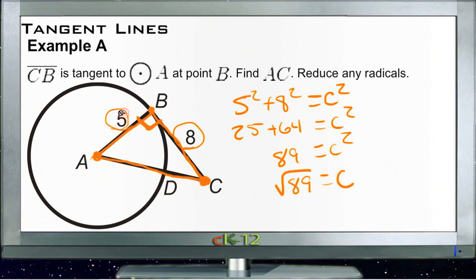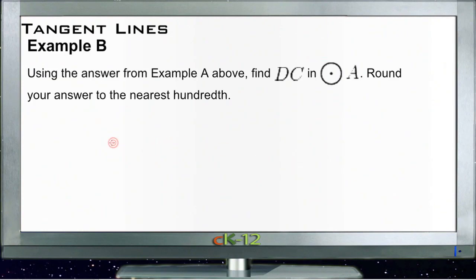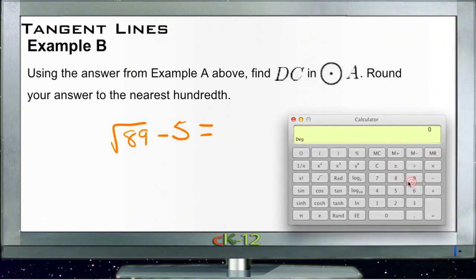So what we need to do is take the radius, which is five units, away from that entire length, which we calculated as the square root of 89. So if we do that, we get square root of 89 minus 5. Punch square root of 89 into our calculator, 89 square root 9.4339 subtract 5, 4.4339.